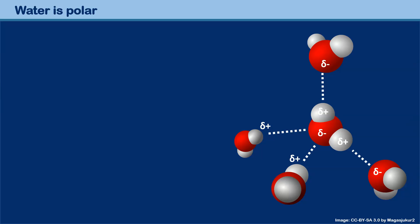And this small delta sign over here refers to a so-called partial charge. So the water molecule is not fully negatively charged here at the oxygen and not fully positively charged over here, but only partially.